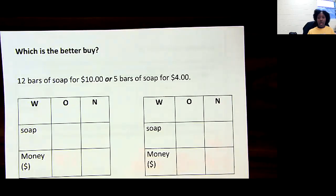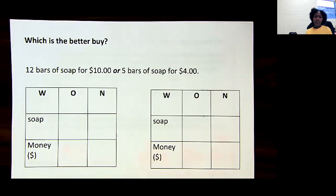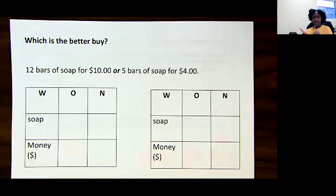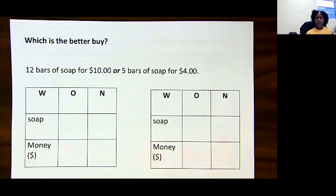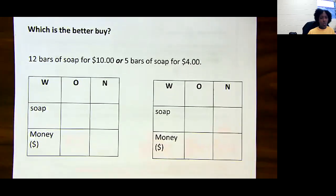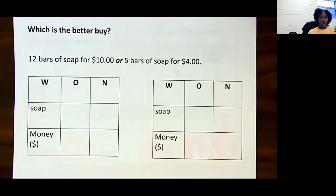All right, ladies and gentlemen. So again, a unit rate is when we're trying to figure out how much it is for one of something. But once we find out how much it is for one of something, we sometimes have to compare to see what's the better deal. So let's look at this one. Which is the better buy: 12 bars of soap for $10 or 5 bars of soap for $4? I need to figure out which one's the better one to buy.